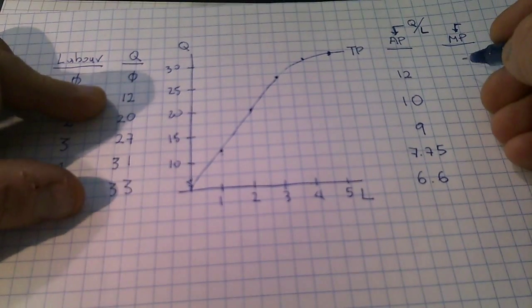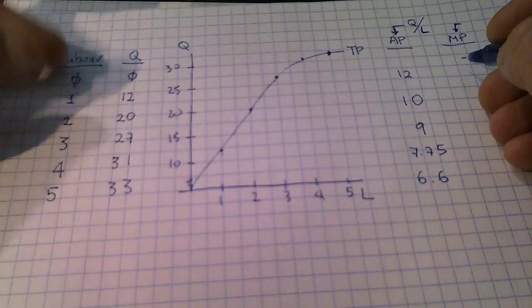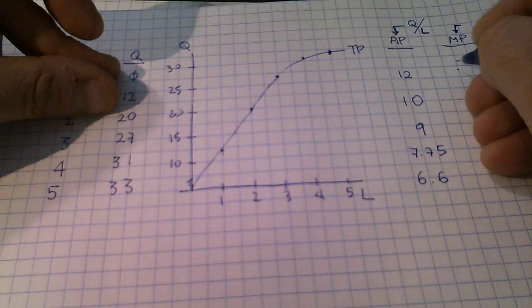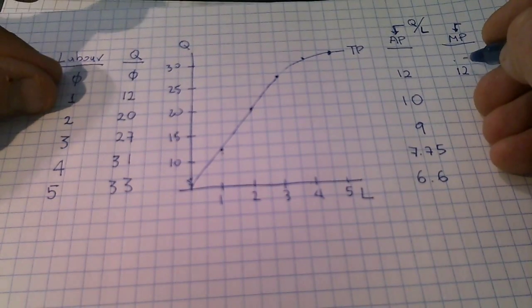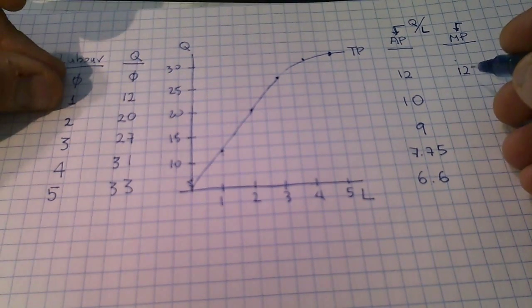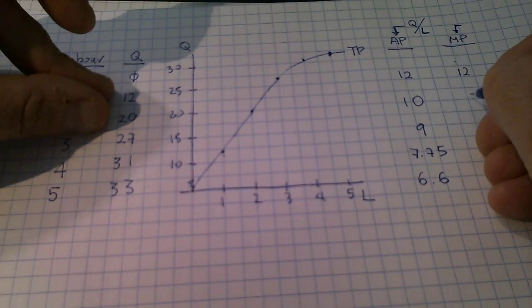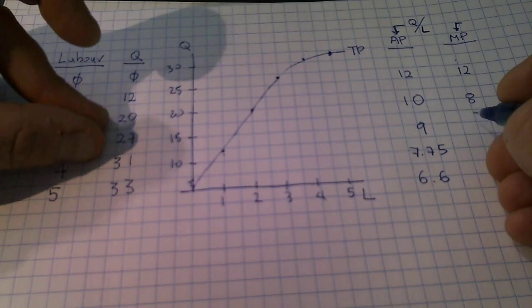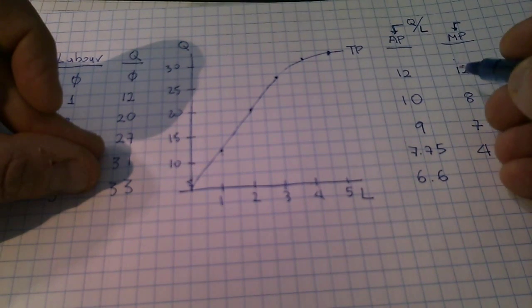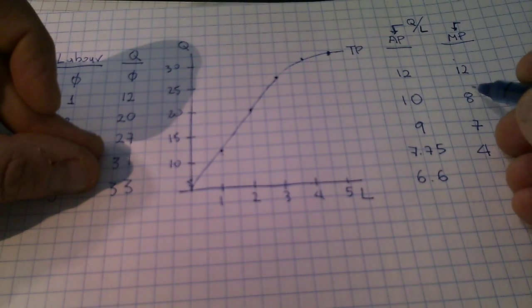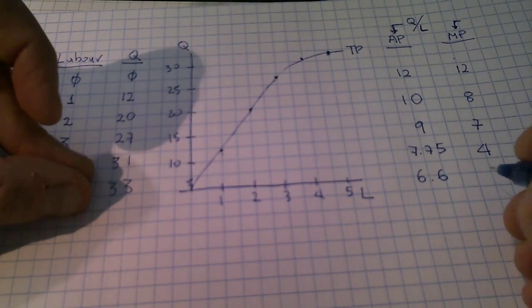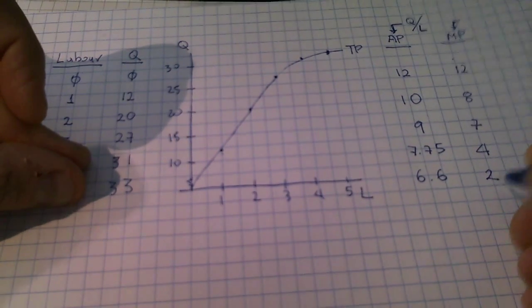Marginal productivity is the additional output produced from an extra unit of labor. Here, labor always changes by one. So marginal productivity is initially 12 — I just told them to put it exactly at the level of one unit of labor since the data is discrete. Then 8, then 7, then 4. The first worker produces 12 additional units of output, the second worker produces an additional 8 units, then 4, then 2.